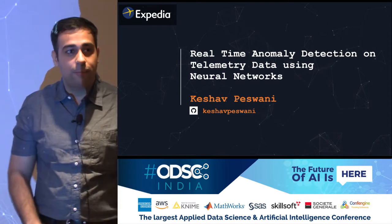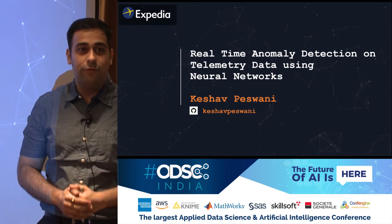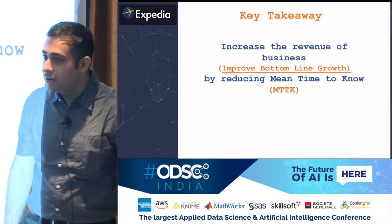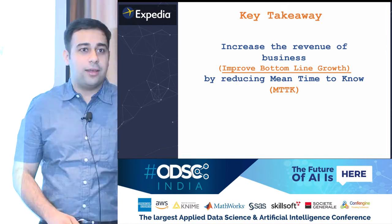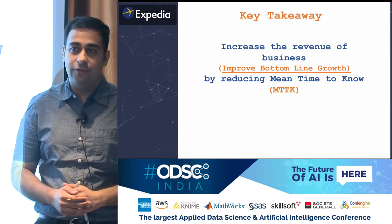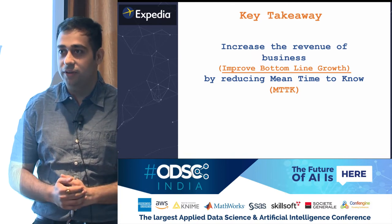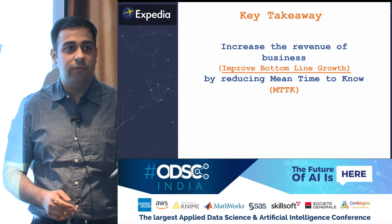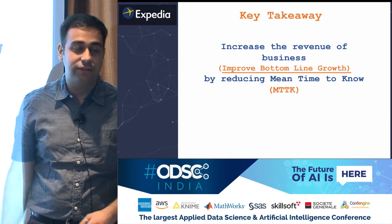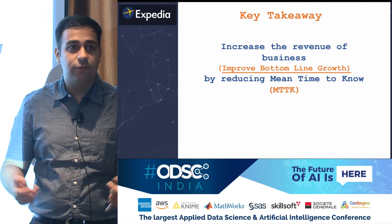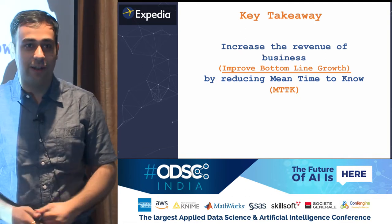Before I dwell into this complex topic of Real-Time Anomaly Detection, if there is one thing that you guys can take away from this presentation, it is this: how do you increase the revenue of your firm's business by reducing the mean time to know. Mean time to know is the time difference between when an incident occurs and when we get to know the root cause. More money saved for the firm is more money in our pockets — that was the key agenda when I was building this system.